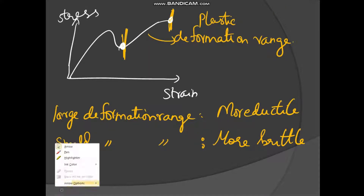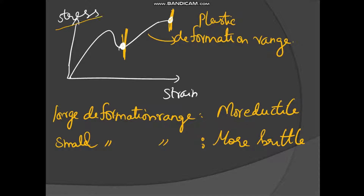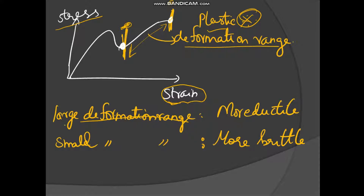Now let us see the Hooke's Law graph. On the x-axis we take stress and on the y-axis we take strain. There is one bend and then the end of the graph. The region between the bend and the end is the plastic deformation region. If this plastic deformation region is large, then that substance is more ductile.